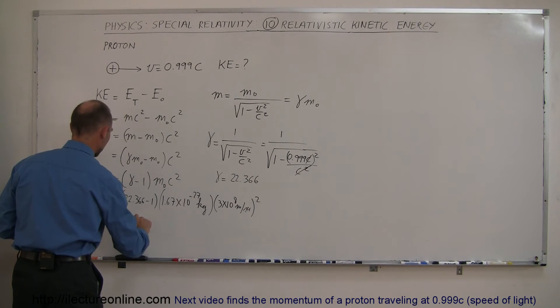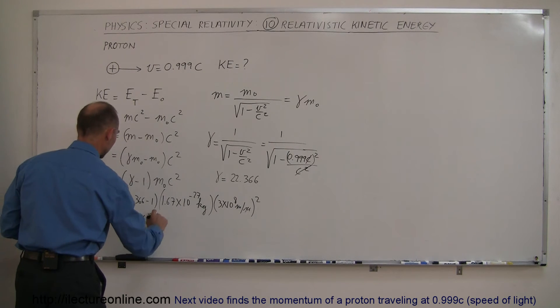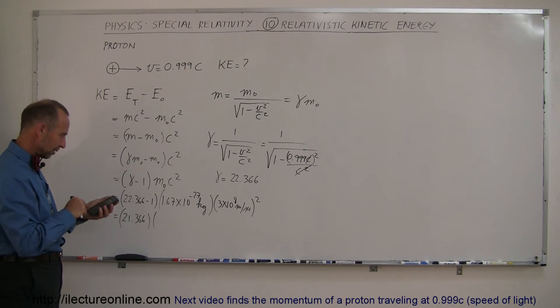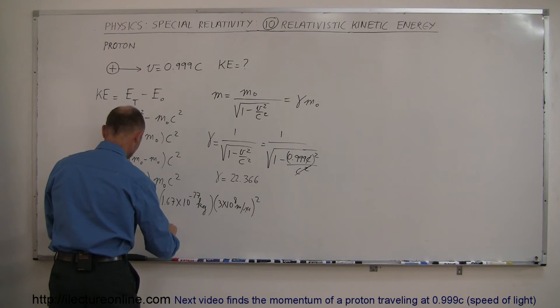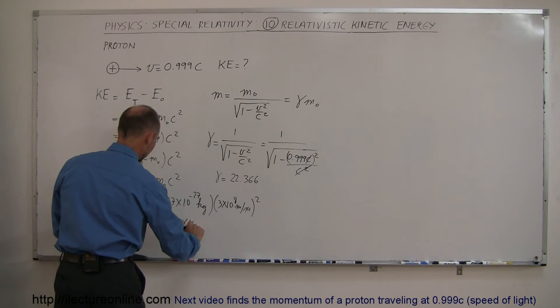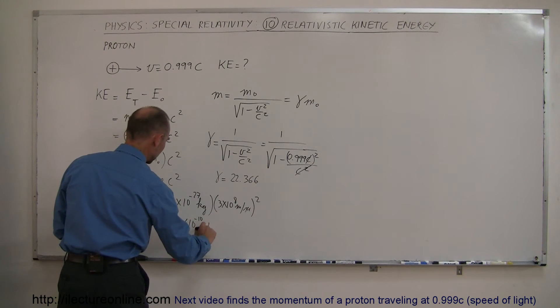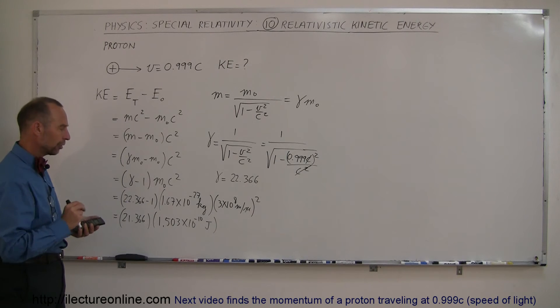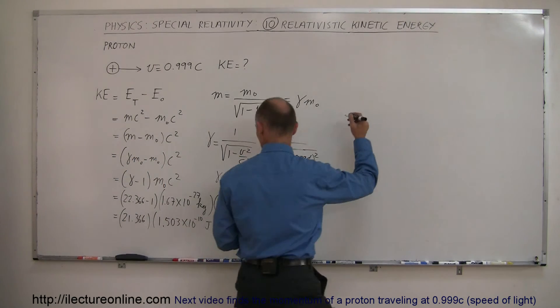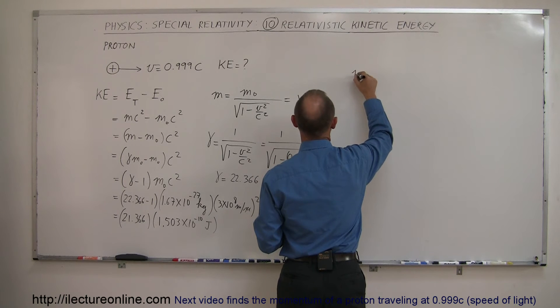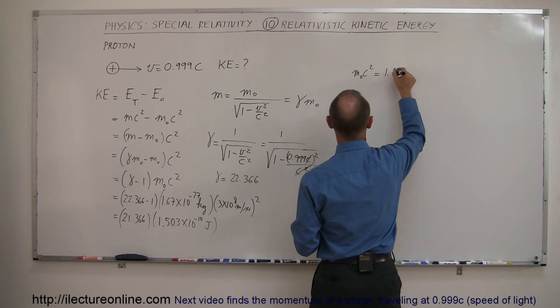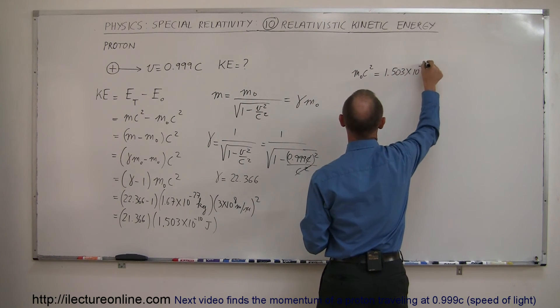So this is equal to 21.366, multiply times that. So what is that equal to? 3e to the 8, we square that, multiply times 1.67, e to the 27 minus equals. So it would be 1.503 times 10 to the minus 10. That would be joules, of course. So energy would be in joules, and we're going to convert that to electron volts in just a moment. So the m sub-naught C squared of a proton is equal to 1.503 times 10 to the minus 10 joules.